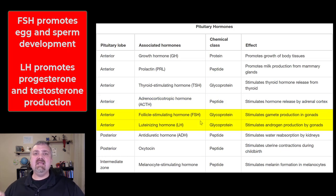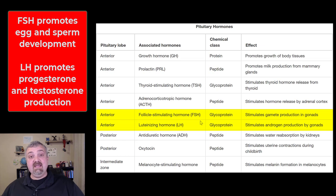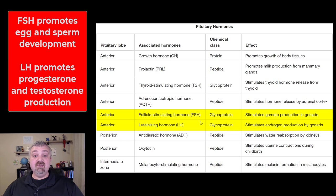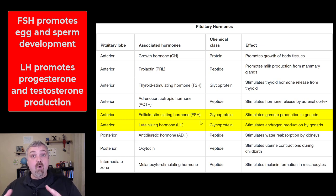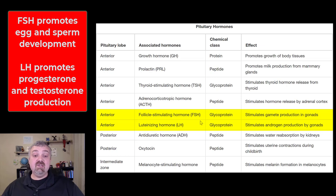Next we have the two gonadotropins: follicle stimulating hormone and luteinizing hormone. They're both important for men and women, but we generally think about them with females. A simple rule: F comes before L in the alphabet, and E comes before P — so follicle stimulating hormone primarily leads to an increase in estrogen, and luteinizing hormone leads to an increase in progesterone. FSH leads to gamete production — stimulating the follicle containing the egg in females, and sperm maturation in males. Luteinizing hormone stimulates progesterone production and also testosterone production in males.